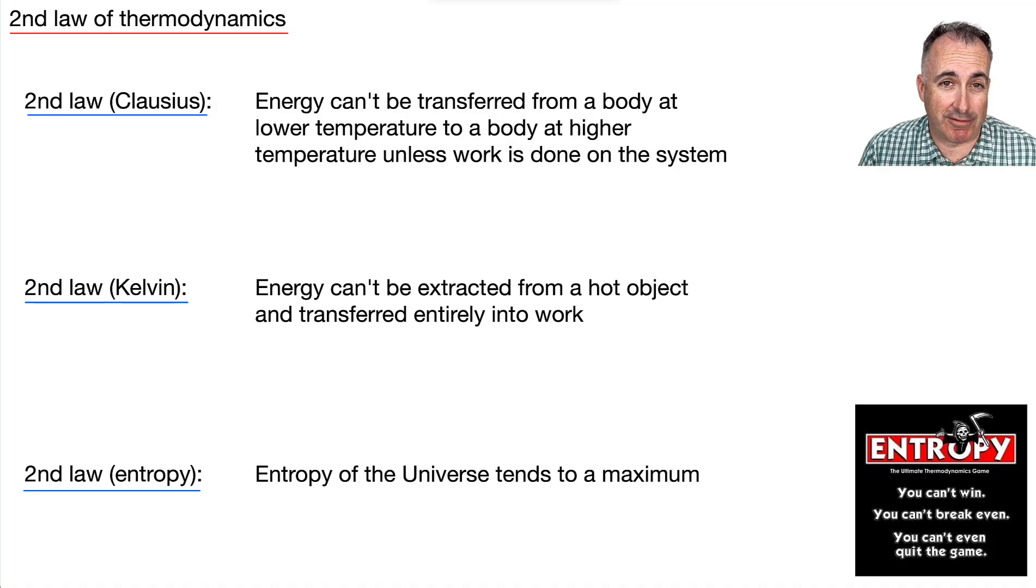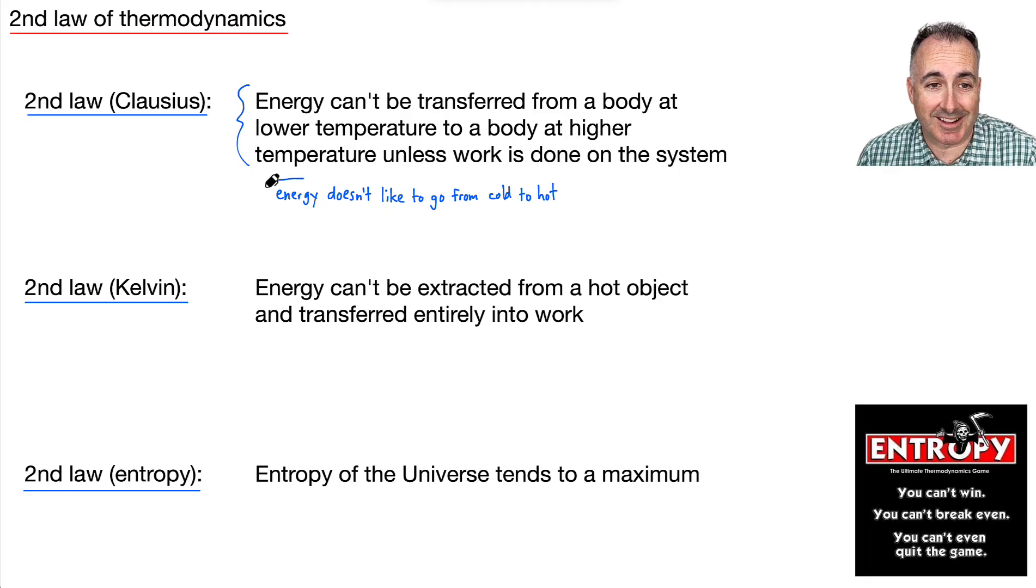So now let's talk about the second law of thermodynamics. We've got 3 different formulations that are actually pretty important. So first, second law, the Clausius version, says that energy can't be transferred from a body at a lower temperature to a body at a higher temperature unless work is done on the system. So what does that really mean? I could say this: the energy doesn't like to go from cold to hot. You remember, it prefers to go hot to cold. So that's one version.